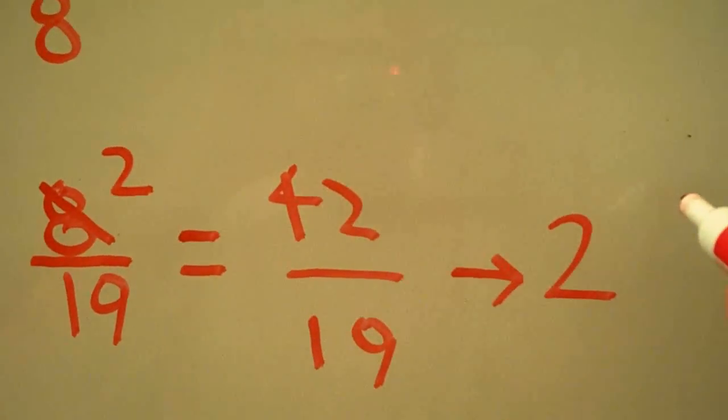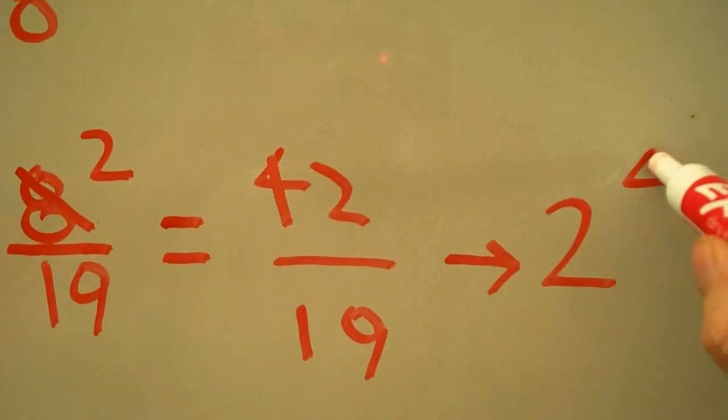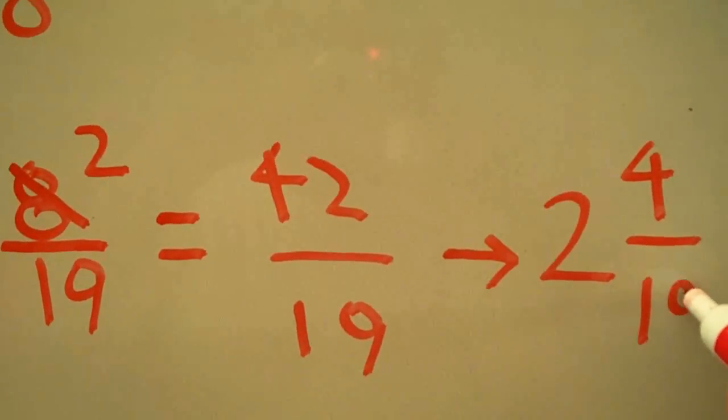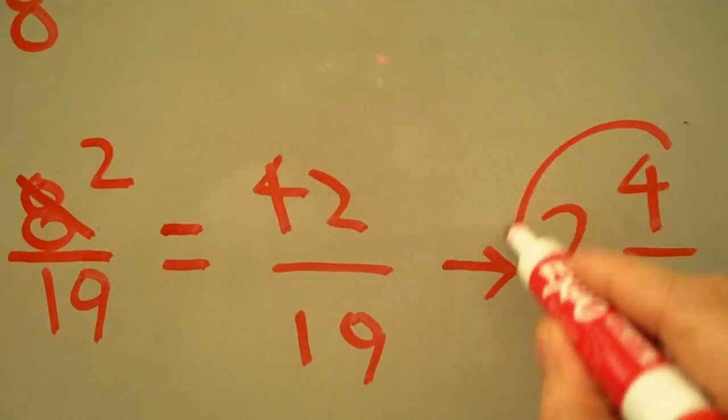There are 4 left over to get to 42, so our final answer is 2 and 4/19.